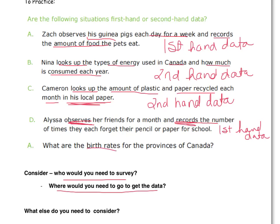Lastly, what are the birth rates for the provinces of Canada? Would we be able to collect how many people were born in Alberta, BC, Prince Edward Island, or Newfoundland? We're probably not going to go to each province and collect all of that information ourselves — we're going to a database on the Internet, maybe Census Canada. That would definitely be second-hand data. So when considering first-hand or second-hand data: who would you need to survey, and where would you need to go? If you're going all over the place, it's unlikely you're collecting it yourself.